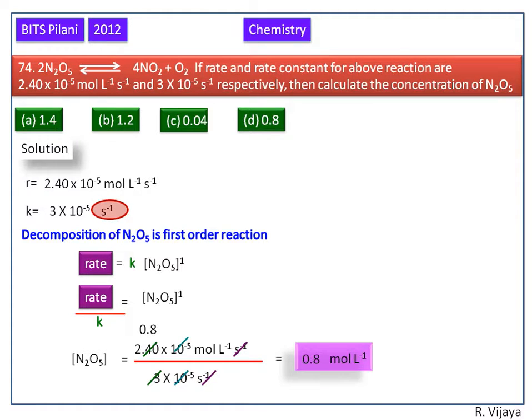So the concentration of N2O5, that is the correct answer, is 0.8, option D. Thank you.